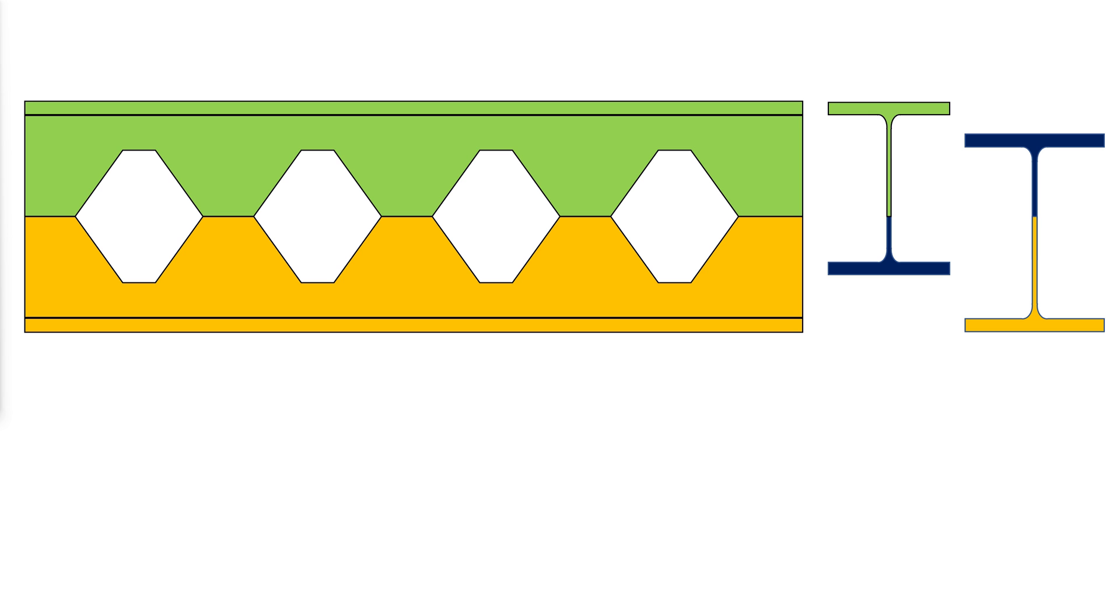For example, if the root beam for the top T of the castellated or cellular beam is a W21 by 44, and the root beam for the bottom is a W24 by 55, then the castellated beam would be CB30 by 44 slash 55.